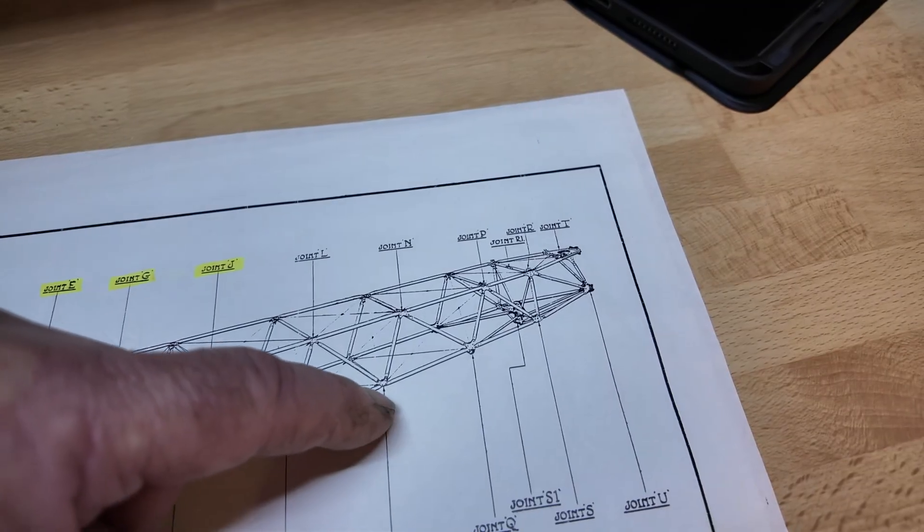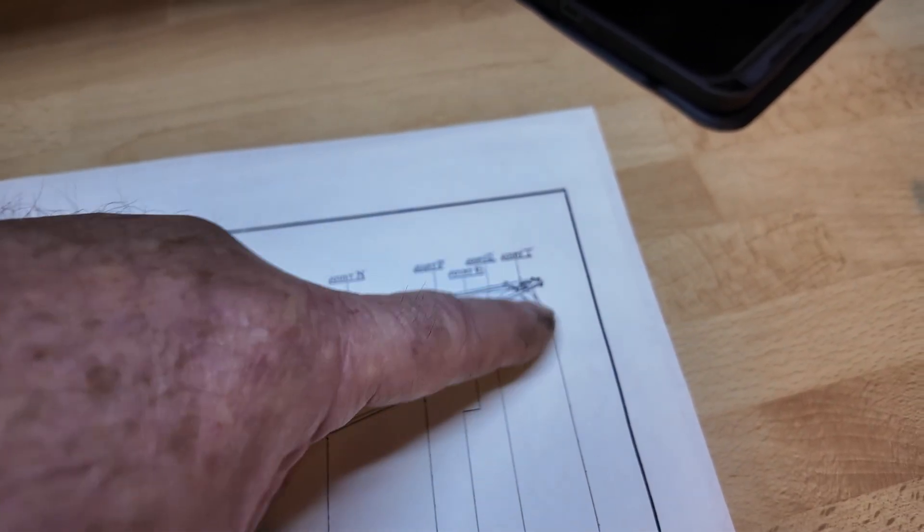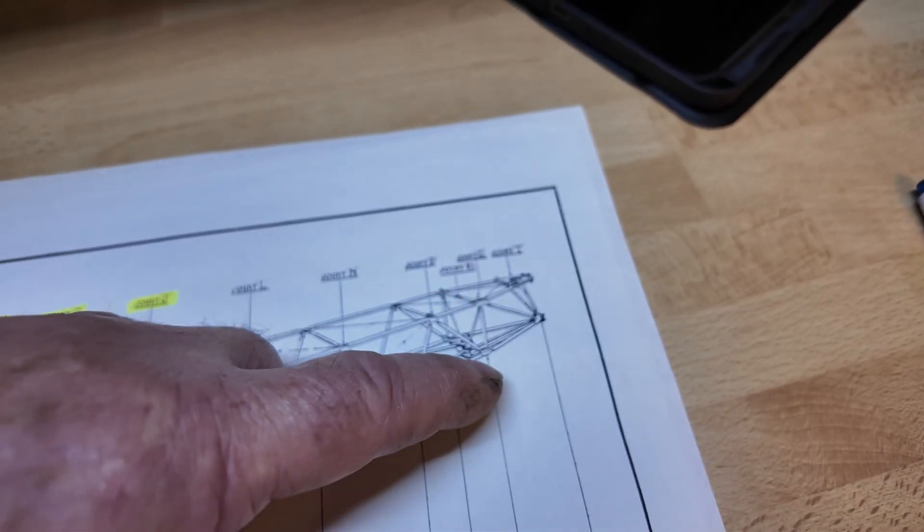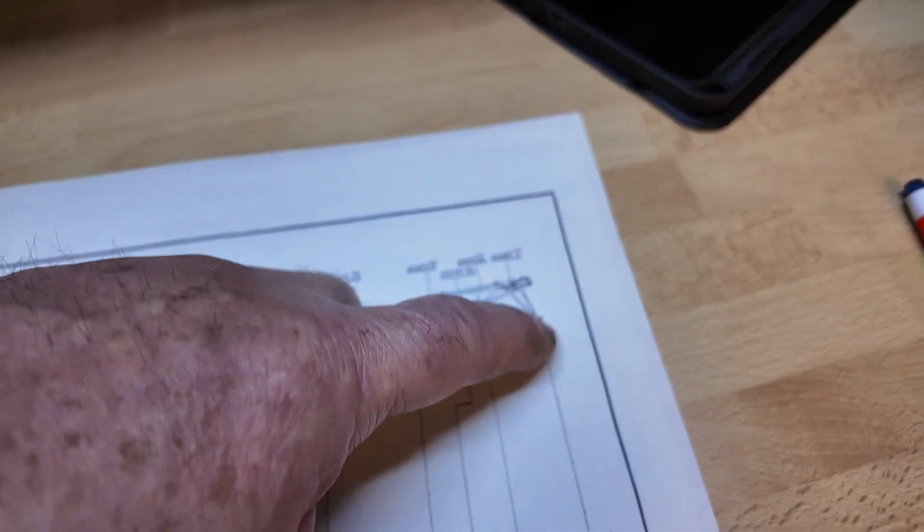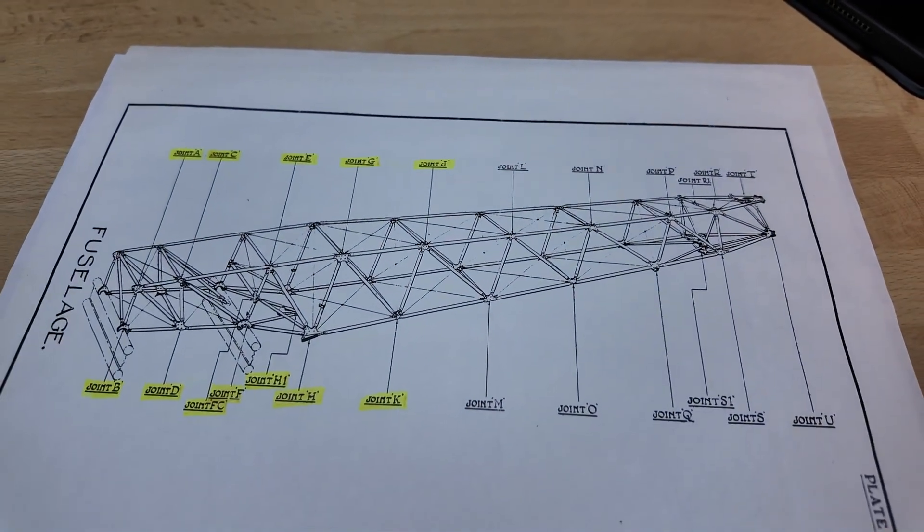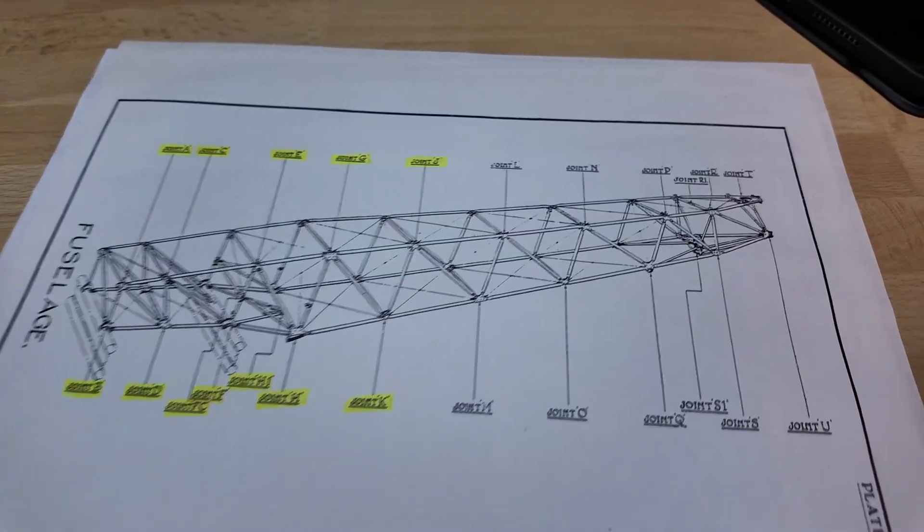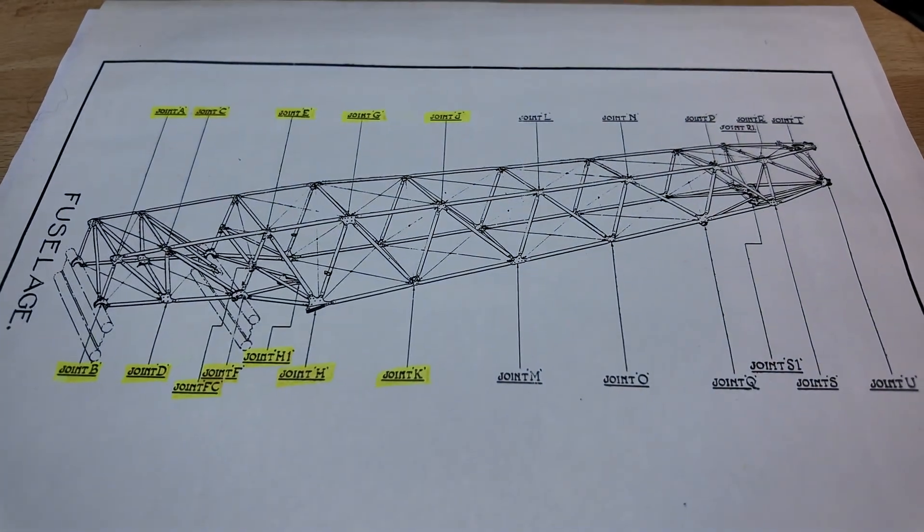And then you've got P, Q. And then a little bit we've been working on is this bit at the back. So you've got R, S, T, U. The numbering then bizarrely continues on the engine bearer, which we'll get into when we get onto the engine bearer.